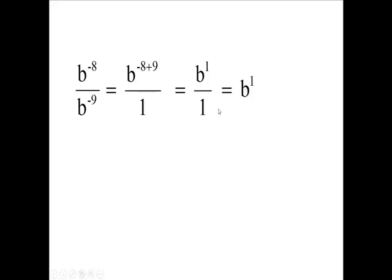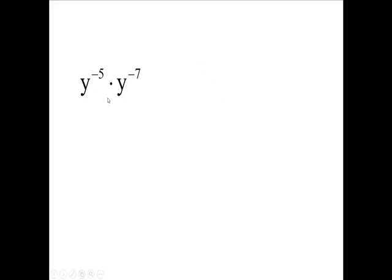Now watch, we have negative five and negative seven, makes negative twelve. And we shift this down to the bottom. If I want to have a plus exponent, shift it down to the bottom, make it a plus twelve.